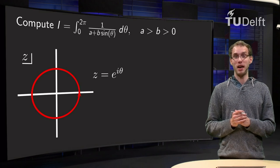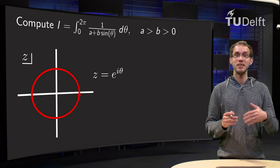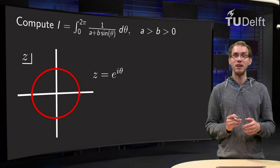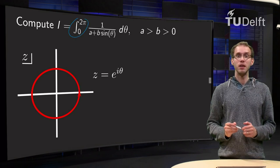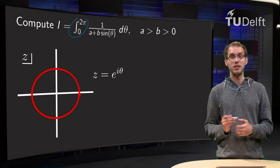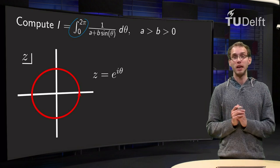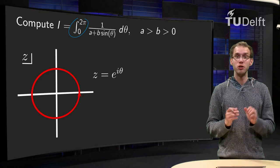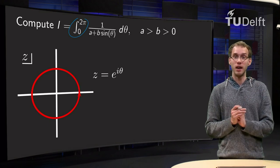So how are we going to do that? We will use complex variables and we will define z equals e to the power i theta. Because theta is going between 0 and 2 pi over there, that means that the variable z is going once around the unit circle, so we get a contour at the unit circle, circle of radius 1, and we go around once counterclockwise.